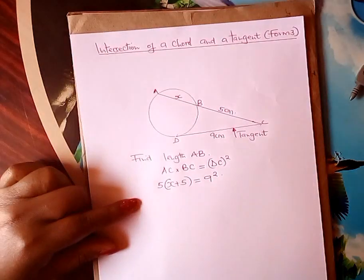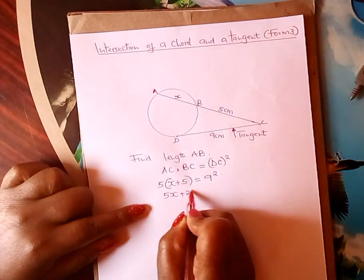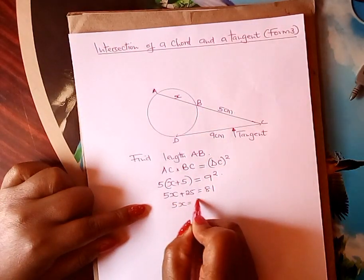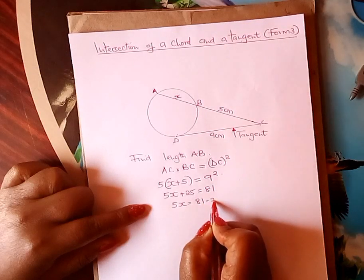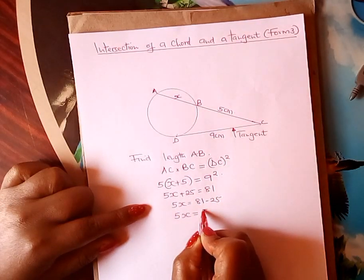I hope you've understood that. So from there learner, you remove the bracket: 5X plus 25 equals 81. And therefore 5X equals 81 minus 25. 5X learner equals 56.